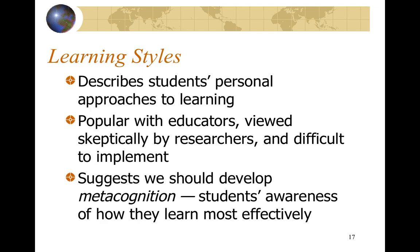The difference between intelligence and learning style is that learning style describes your preferred learning method. This is more popular in education than in research, as researchers find it difficult to measure. Metacognition — students' awareness of how they learn most effectively — helps them get there, but it's hard for teenagers to cognitively reflect on how they best learn. It takes a level of maturity to really understand when you're in your element.